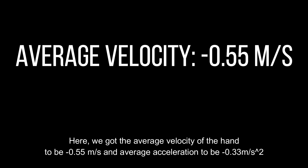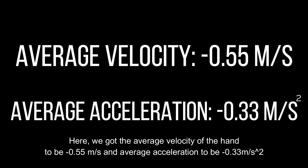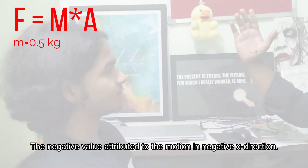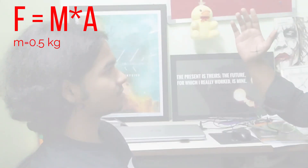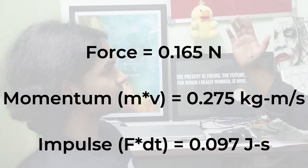We got the average velocity of the hand to be minus 0.55 meters per second and average acceleration to be minus 0.33 meters per second squared. The negative values are attributed to the motion in the negative x-direction. With F = ma, force turned out to be 0.165 Newtons.